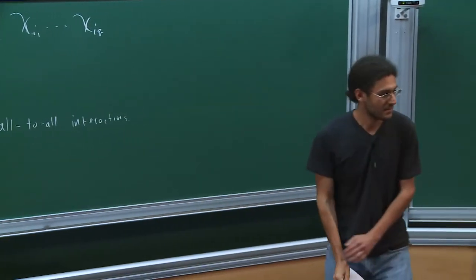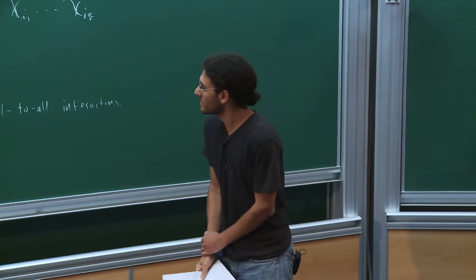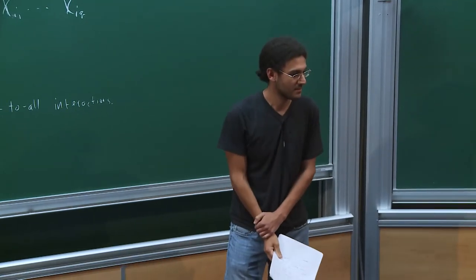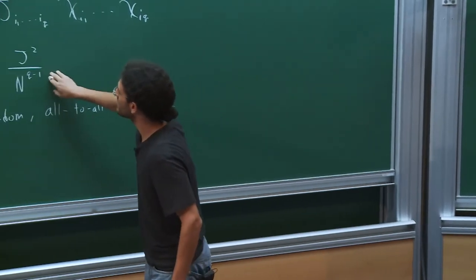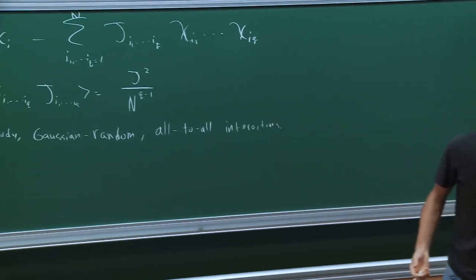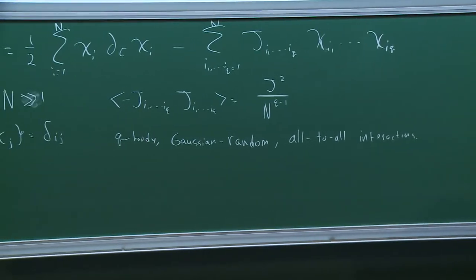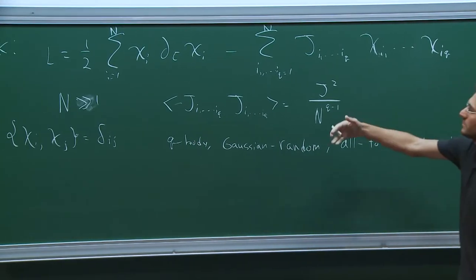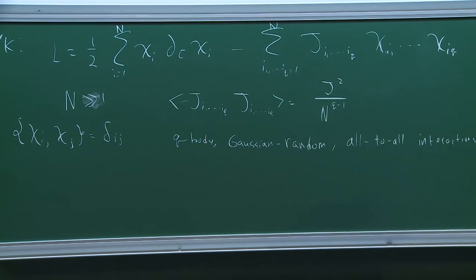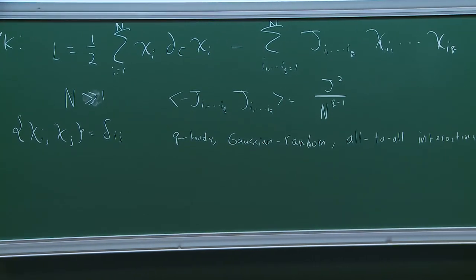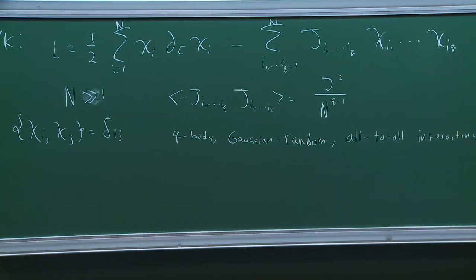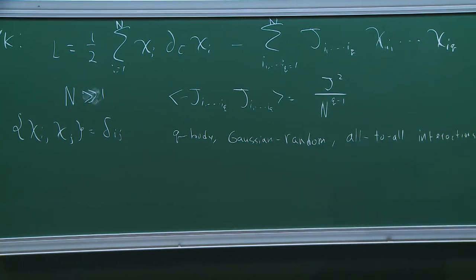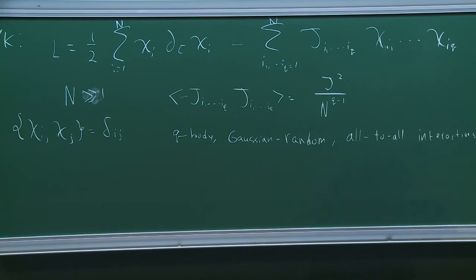The scaling with N is chosen so that the correction to the two-point function of fermions from the interaction is of order one. If you chose a different power, a different class of diagrams would dominate. The Majorana choice doesn't matter fundamentally — you could take Dirac fermions as well. Kitaev prefers Majorana fermions and Sachdev preferred Dirac. With Dirac fermions you'd put q/2 creation operators and q/2 annihilation operators, and then you conserve particle number, unlike the Majorana case.